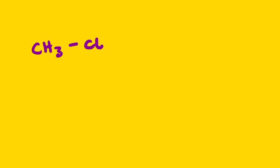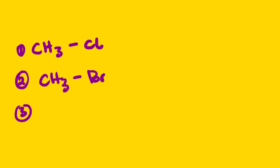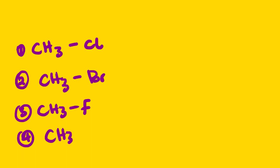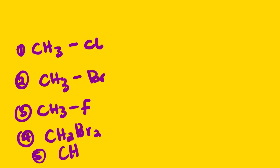Now suppose we have a series of compounds: compound one is CH₃Cl, compound two is CH₃CH₂Br, compound three is CH₃CH₂CH₃, compound four is CH₂Br₂, and compound five is CH₃CH₂CH₂Br. Arrange these compounds in order of increasing boiling point.